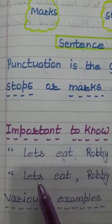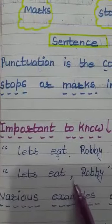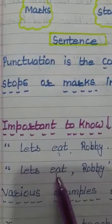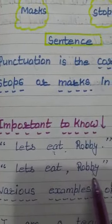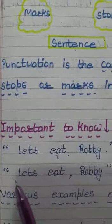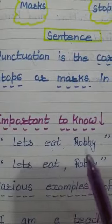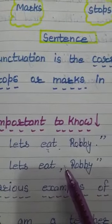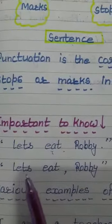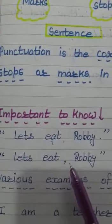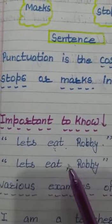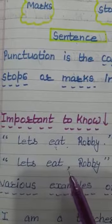Let's move to the second one: 'Let's eat, Robbie.' Now we are talking to Robbie. We see that this sentence is giving a complete meaning, a complete sense. Why? Just because of the adding of this comma. This comma is giving the whole sentence a meaningful sense. So we can see what a miracle the correct use of punctuation can do in a sentence.